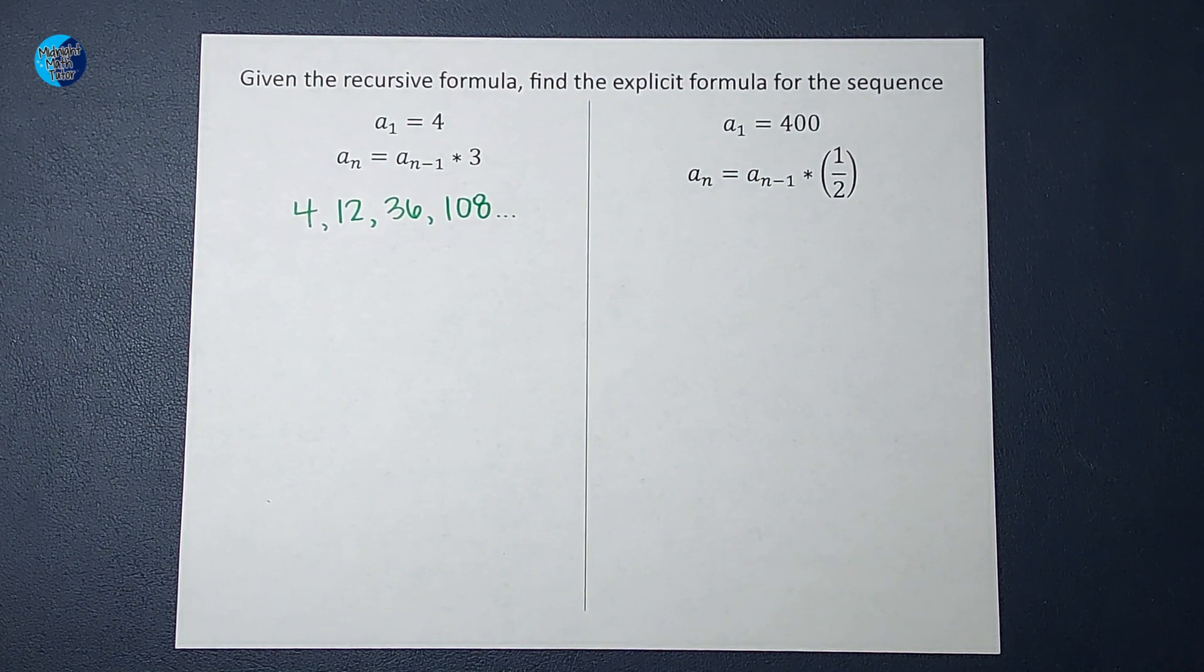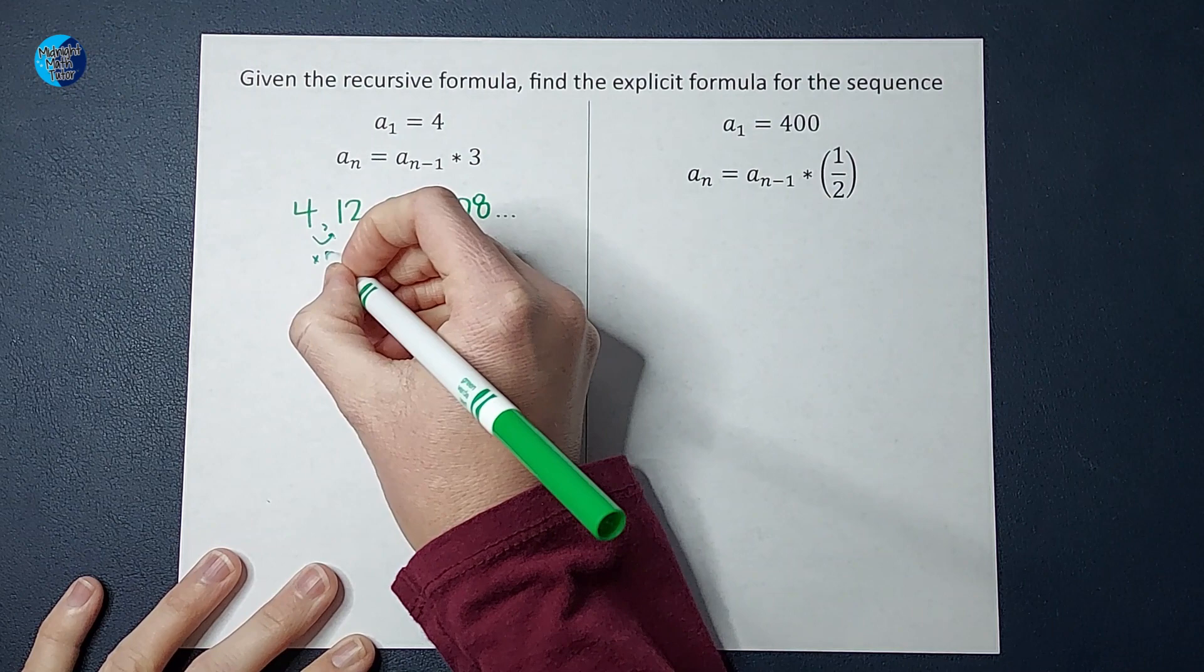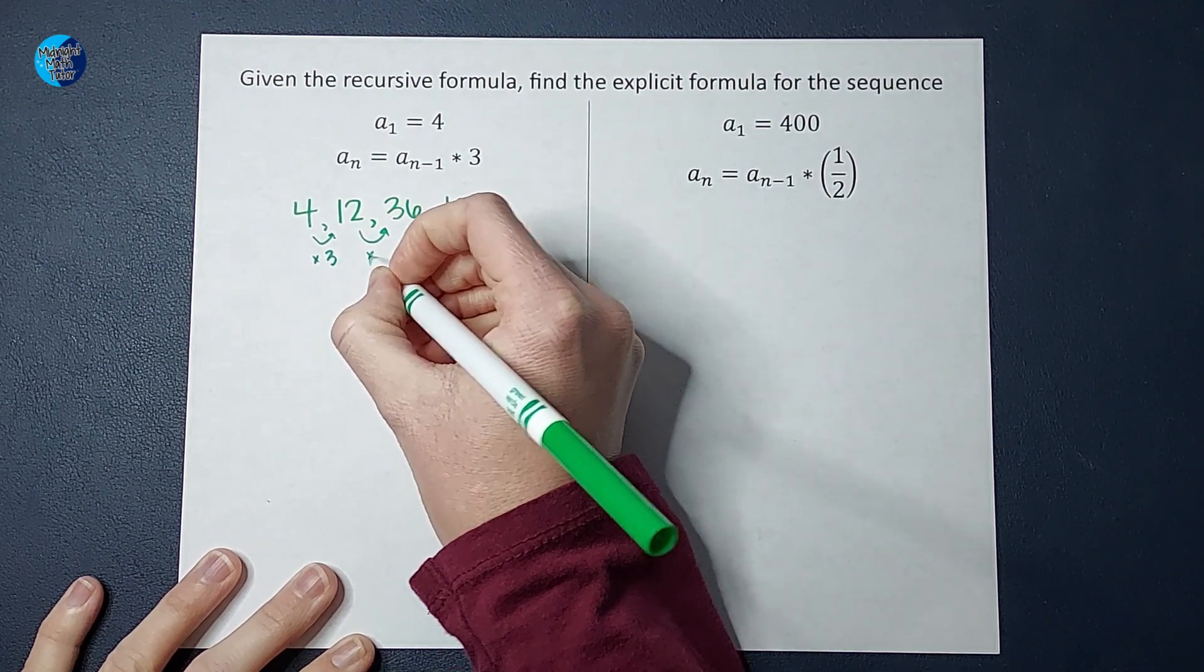All right, so what did I do each time? I multiplied by three, right? That's what this recursive formula told me to do.